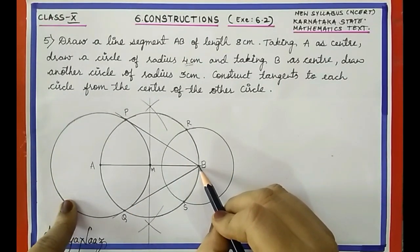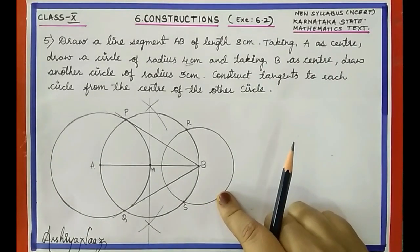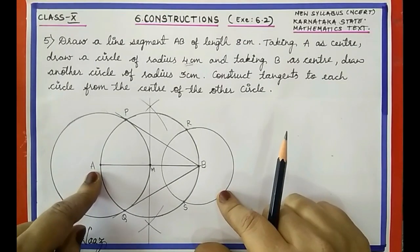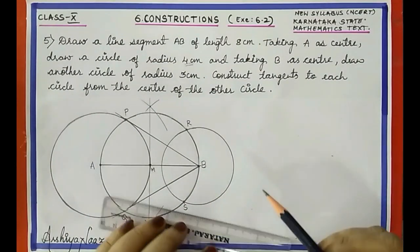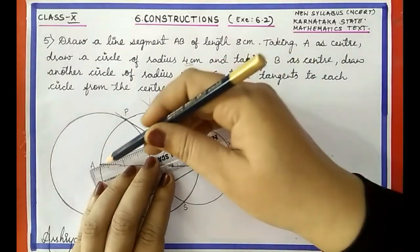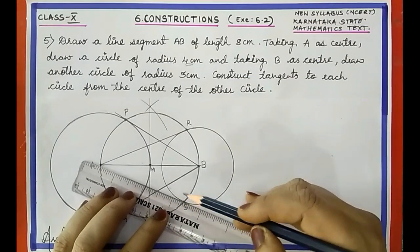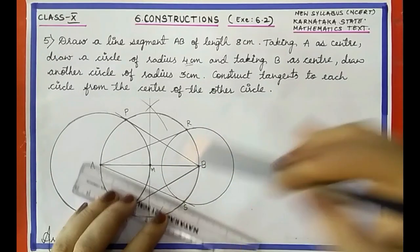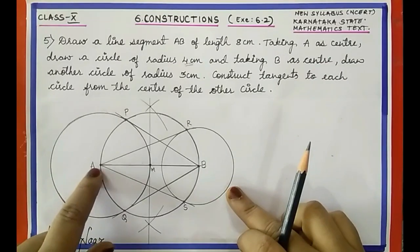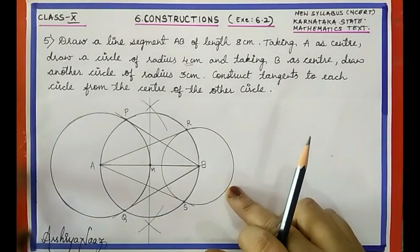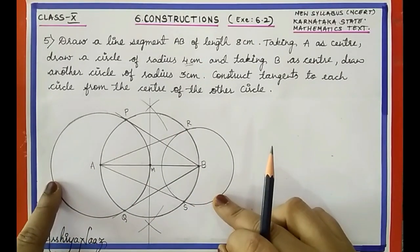Similarly, we want tangents to the second circle from the center of the first circle. For this we join AR and AS. So AR and AS are the two tangents to the second circle from point A, which is the center of the other circle.